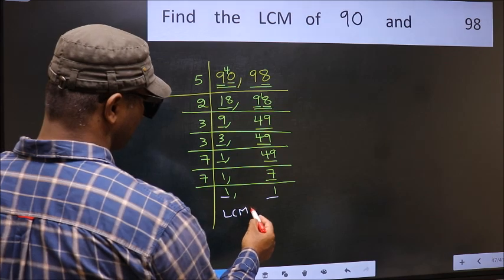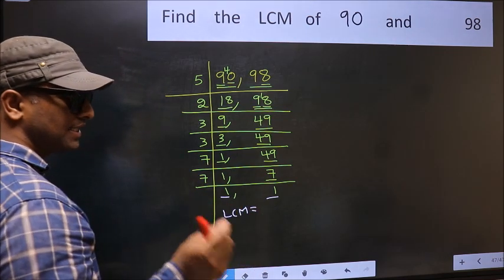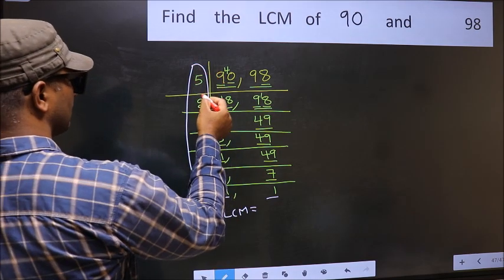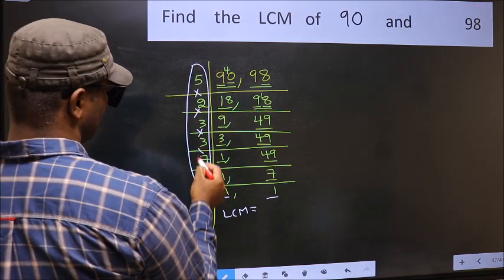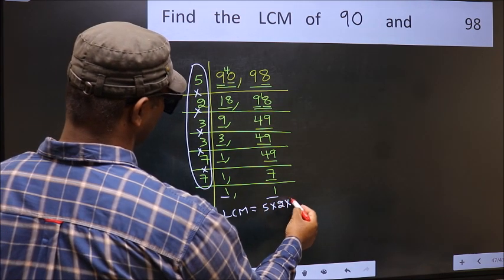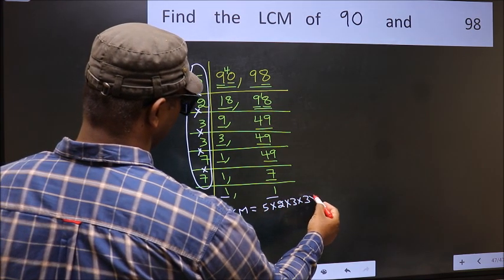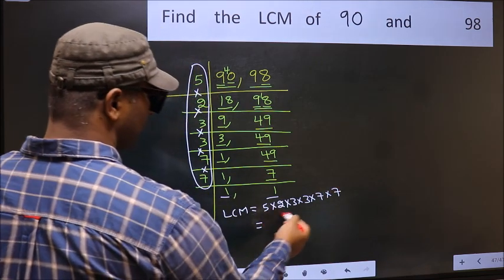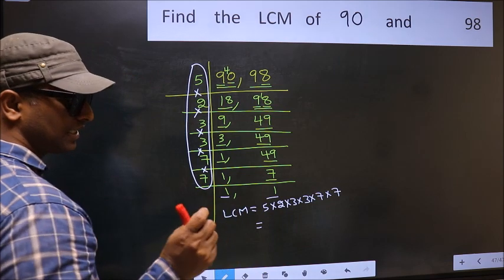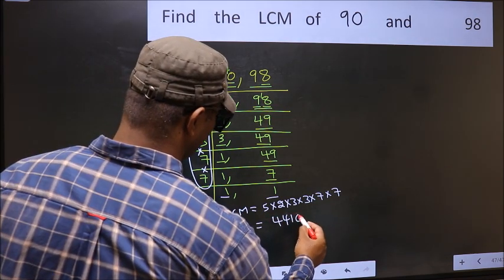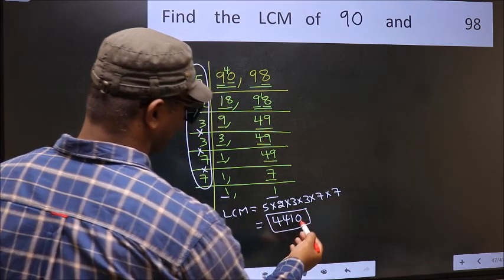So our LCM is the product of these numbers—that is, 5 into 2 into 3 into 3 into 3 into 7 into 7. When we multiply these numbers, we get 4410 as our LCM.